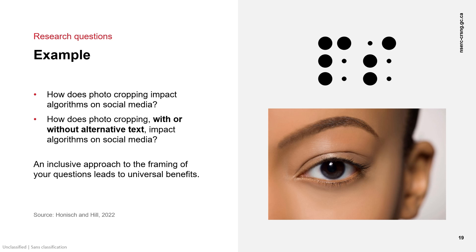Alternative text, or alt text, is brief descriptive text that conveys the meaning and context of an image. Assistive technologies, like screen readers for the visually impaired, read alt text. Considering alt text provides detail and depth to the research question.